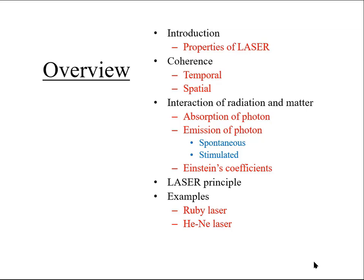In previous lectures, you have learned about properties of laser, different types of interactions between radiation and matter, including stimulated emission, which is the basis of laser. Other essential phenomena like population inversion, pumping, and the requirement of metastable state were also discussed. In this lecture, we shall discuss two examples of laser: namely ruby laser and helium-neon laser.